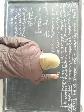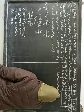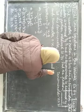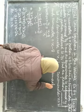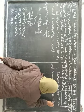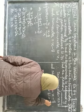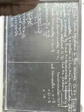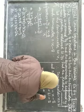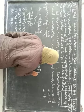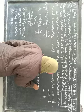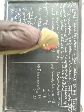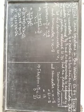Denominator kya hai hamara? x, aur x ki value kitni hai? 21. And numerator kya hai? Numerator jo hai hamara, vo hai x minus 8. x ki value 21 minus 8 — numerator ki value kitni aayi? 13. Ab hamare jo fraction hai, vo kya ho gaya? Fraction — numerator upon denominator. Numerator hai aapka 13, denominator hai 21. Aapka jo fraction hai, vo hai 13 upon 21.